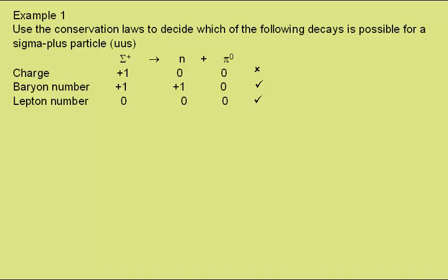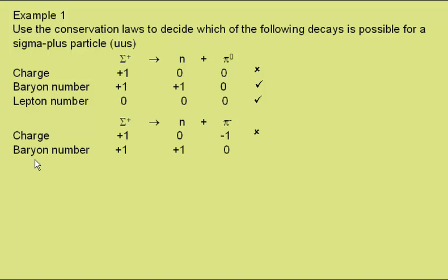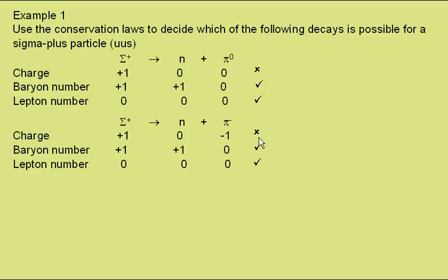The next decay we're given is for the sigma plus to become a neutron plus a pi minus. Looking at charge, the sigma plus has a charge of plus one, the neutron is neutral, the pi minus minus one. So again, in terms of charge conservation, this interaction is not possible. Baryon number: the sigma plus is a baryon, as is the neutron; the pi minus is a meson, so in terms of baryon number this would be possible. For lepton number, none of them are leptons, so we have zero lepton number throughout and it would be possible. But again, one law broken — this interaction is not possible.